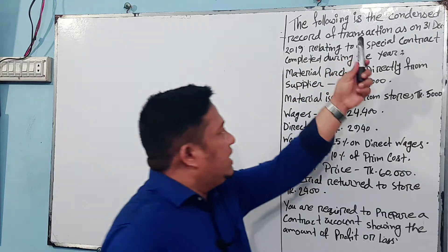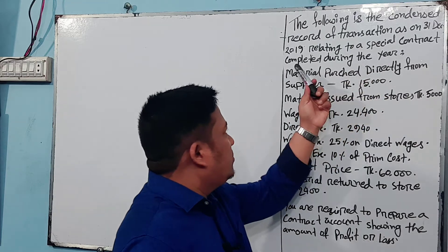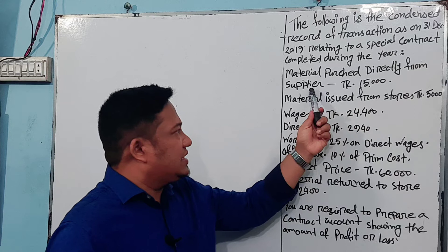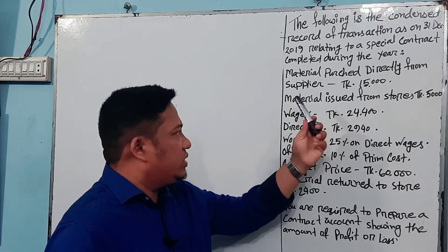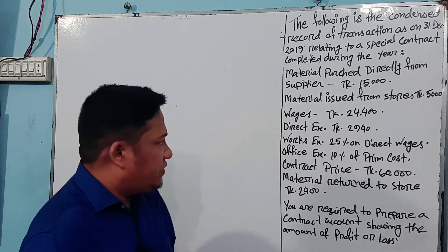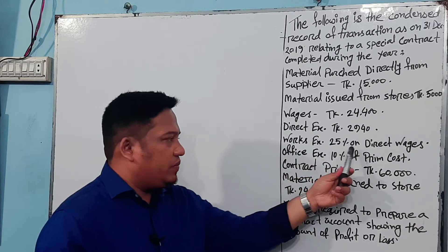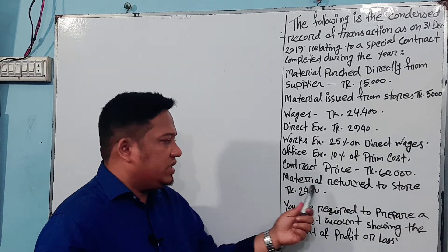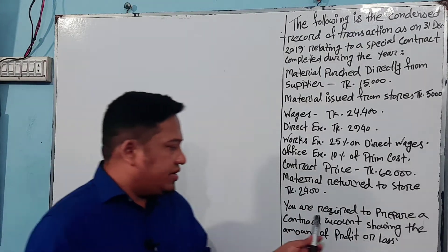The following is the condensed record of transactions as on 31st December 2019, relating to a special contract completed during the year: material passed directly from supplier Taka 15,000; material issued from store; wages Taka 24,500; direct expenses Taka 2,940; works expenses 25% of direct wages; office expenses 10% of prime cost; contract price 60,000; materials returned to store Taka 2,400.